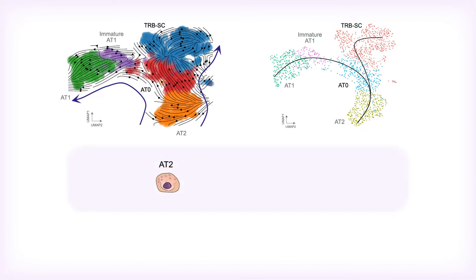Using multiple computational algorithms for predicting cell fate, the team placed TRBSCs and AT0s in context with other alveolar cells in the lungs. They observed a strong trajectory originating from AT2 cells and transitioning toward AT1s or TRBSCs through AT0s.